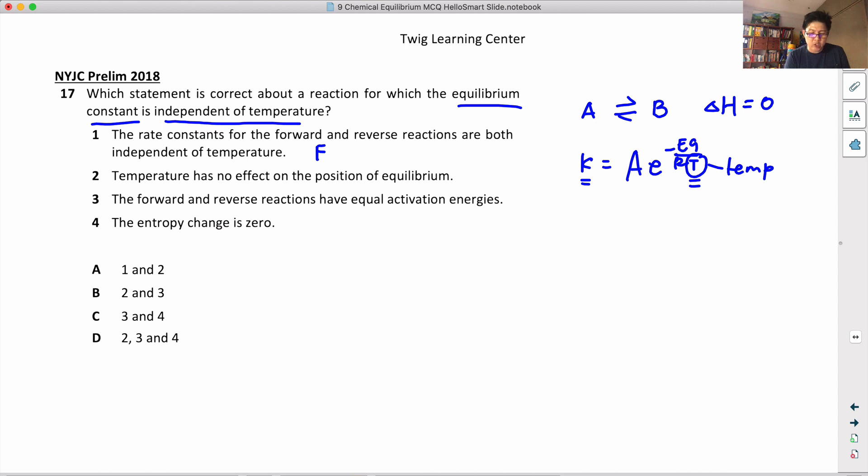Temperature has no effect on the position of equilibrium. So for this case, since this reaction is neither exo or endo, when you increase temperature there is no bias - it won't shift more to right or more to the left. So has no effect. This is definitely true.